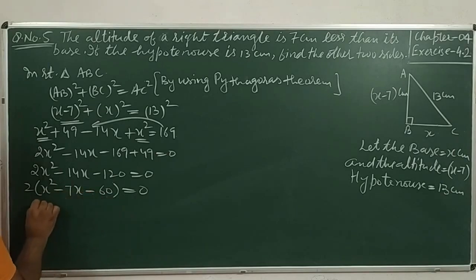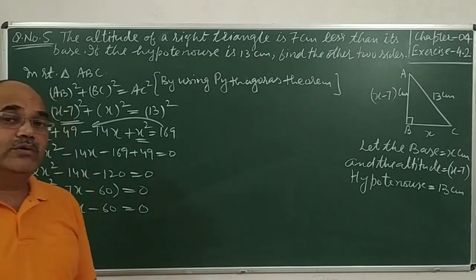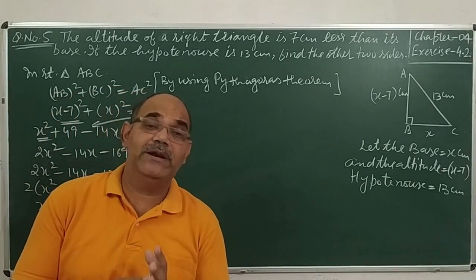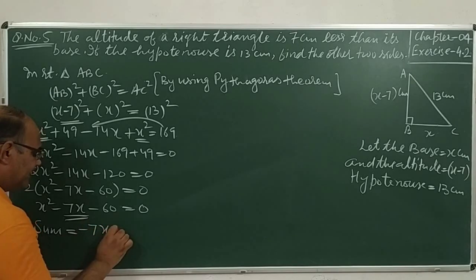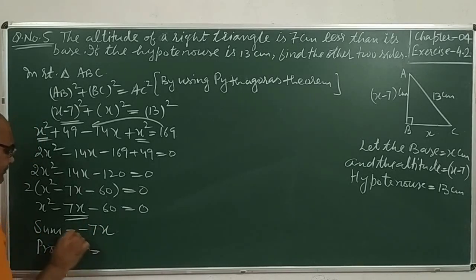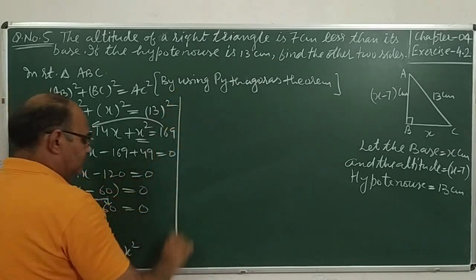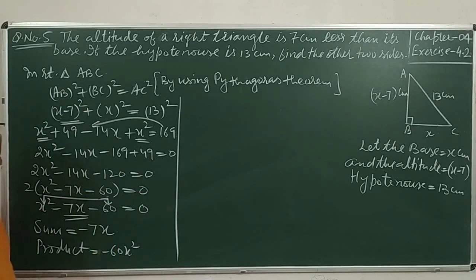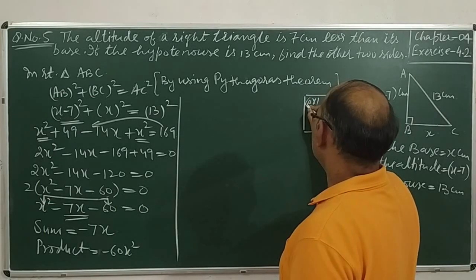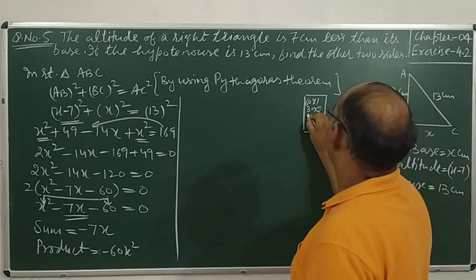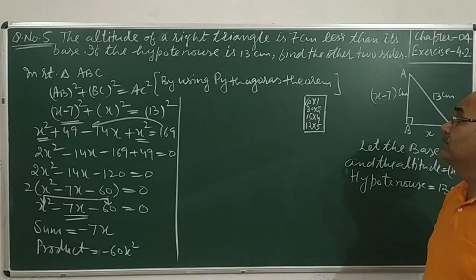Now we solve this by using the splitting middle term method. The sum of the two terms must be minus 7x and the product must be minus 60 x square. Our product is 60. The factors of 60 are: 60 times 1, 30 times 2, 15 times 4, and 12 times 5.